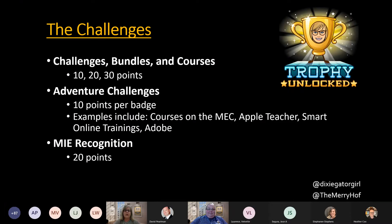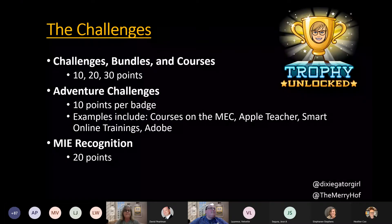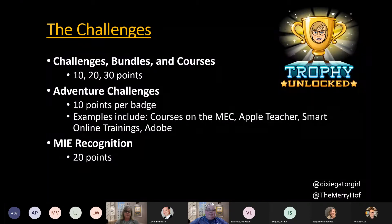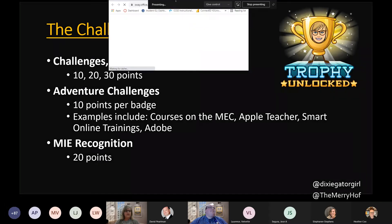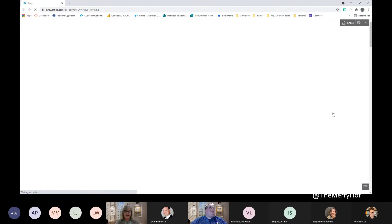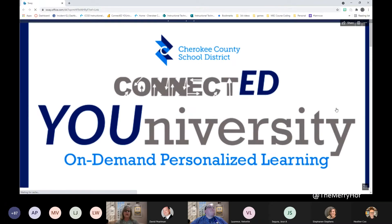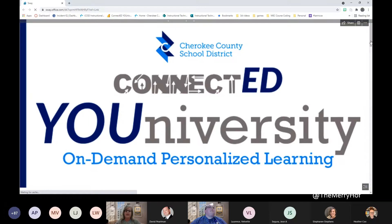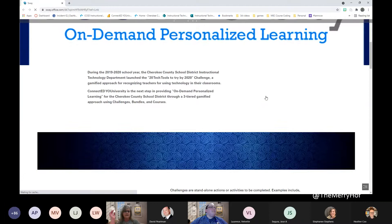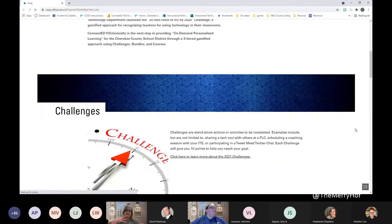In our first year with the 20 by 2020 program, we only included challenges and adventure challenges. But once we saw the success, we wanted the program to encompass all of the PD we offer. So ConnectEd University is now made up of challenges, adventure challenges, bundles, and courses. There's a webpage we made with Microsoft Sway — this is our homepage and it links out to all of our other pages. On this page we lay out all the different types of challenges. As we scroll down, you'll see challenges, bundles, and all of that listed here.